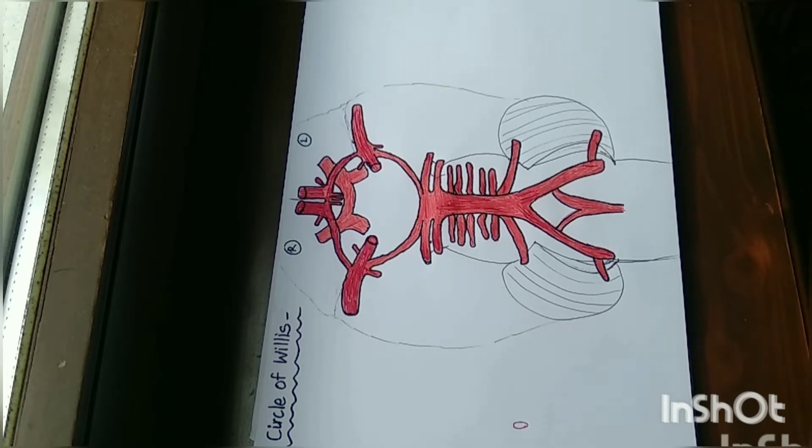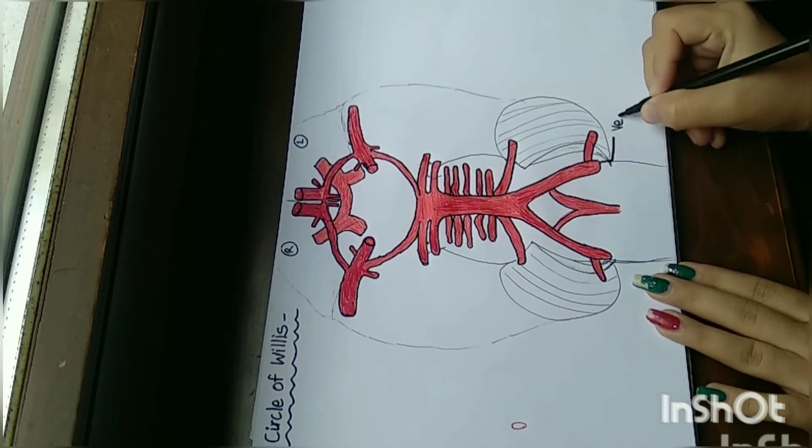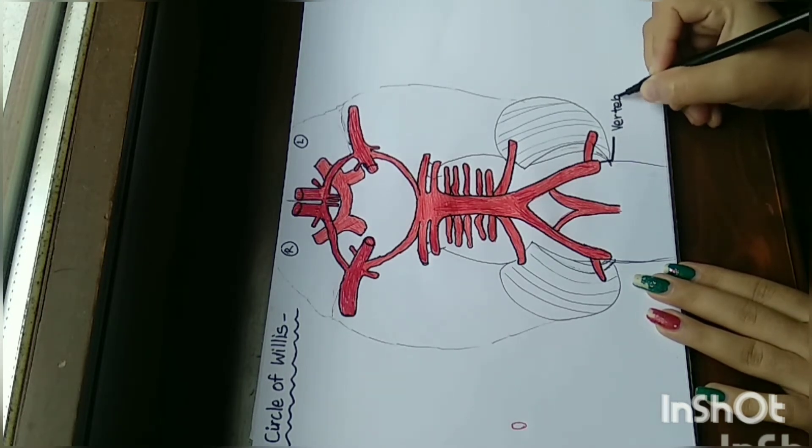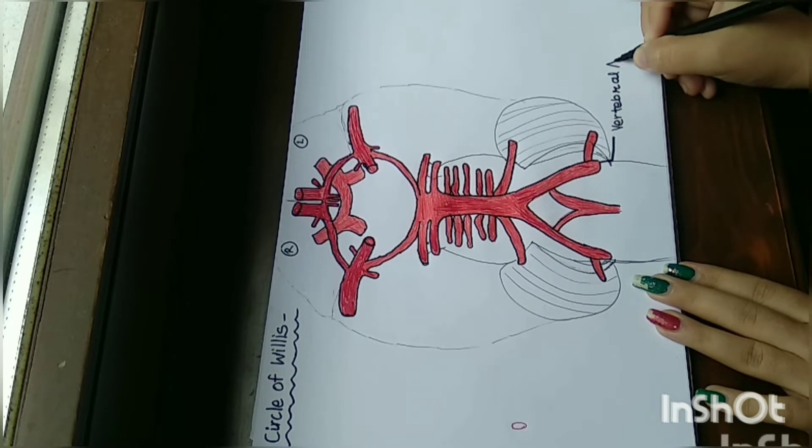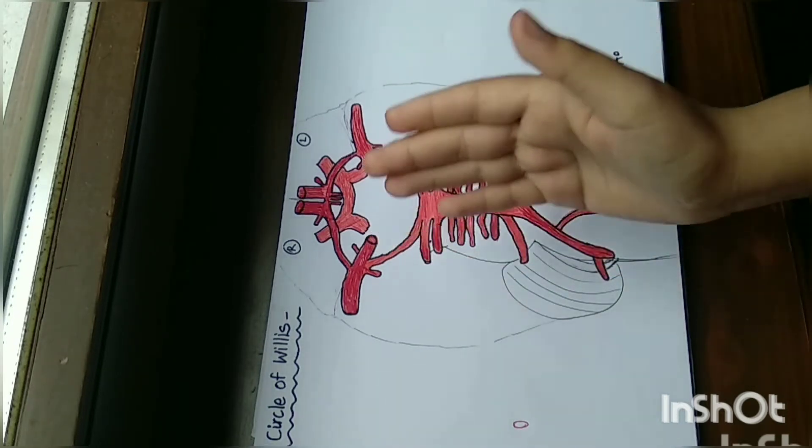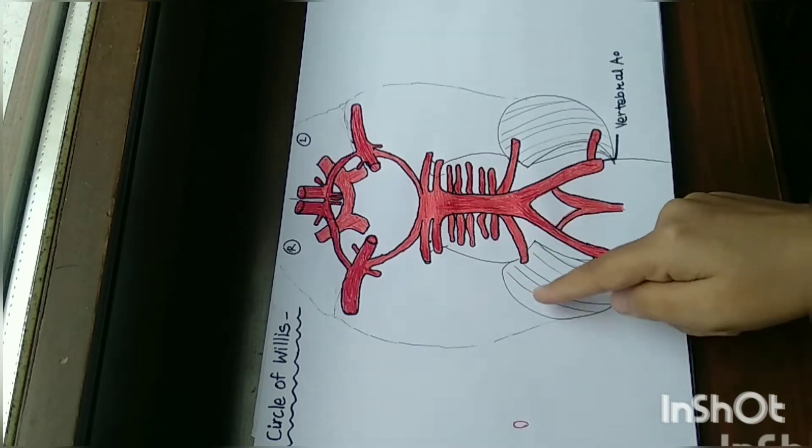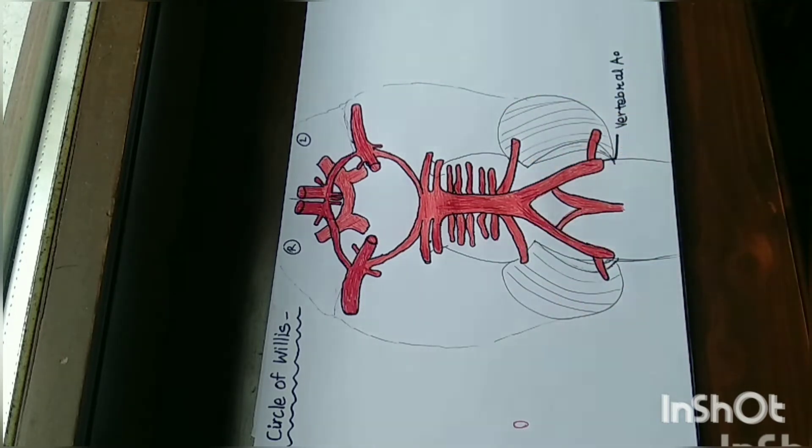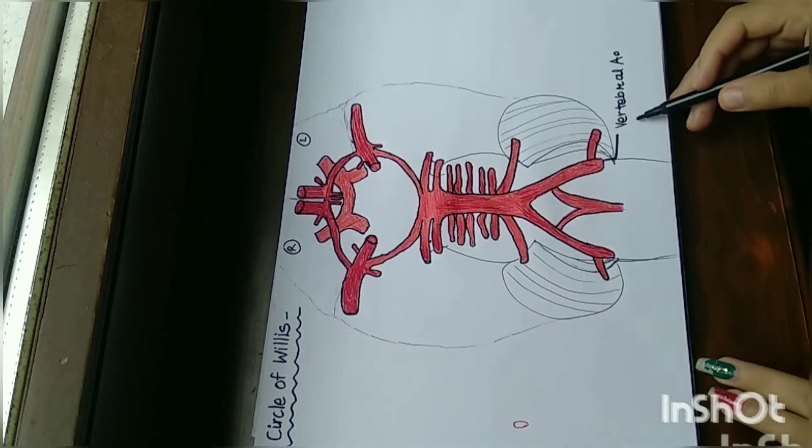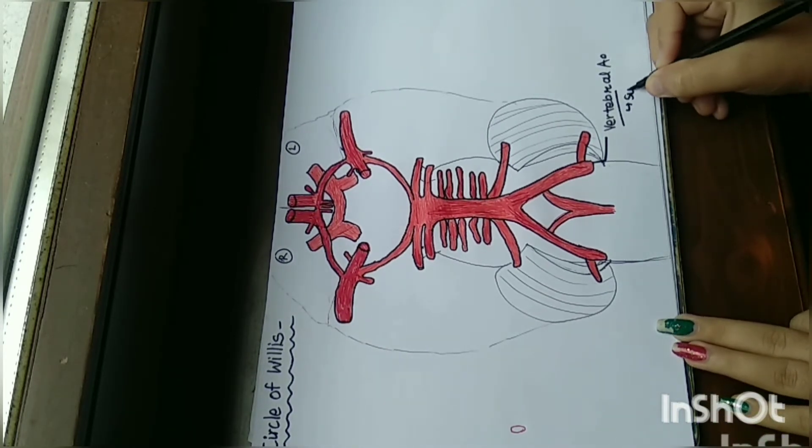Here is the vertebral artery, which comes from the transverse process of cervical vertebra. This side is the right cerebral hemisphere, left cerebral hemisphere, right cerebellum, and the left cerebellum. Here is the vertebral artery which comes from the subclavian artery from the heart.